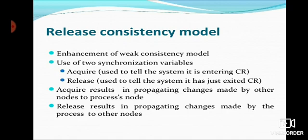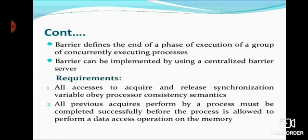The next consistency model is the release consistency model, also called an enhancement of the weak consistency model. It adds features to the weak consistency model. In this model, there are two synchronization variables: acquire and release. Acquire results in propagating changes made by other nodes to the process node. Release results in propagating changes made by the process to other nodes. The requirements are: all accesses to acquire and release synchronization variables obey processor consistency semantics, and all previous acquires performed by a process must be completed successfully before the processor is allowed to perform a data access operation on memory.